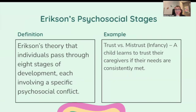Erikson's psychosocial stages: Erikson's theory that individuals pass through eight stages of development, each involving a specific psychosocial conflict. For example, trust versus mistrust — a child learns to trust their caregiver if their needs are consistently met.